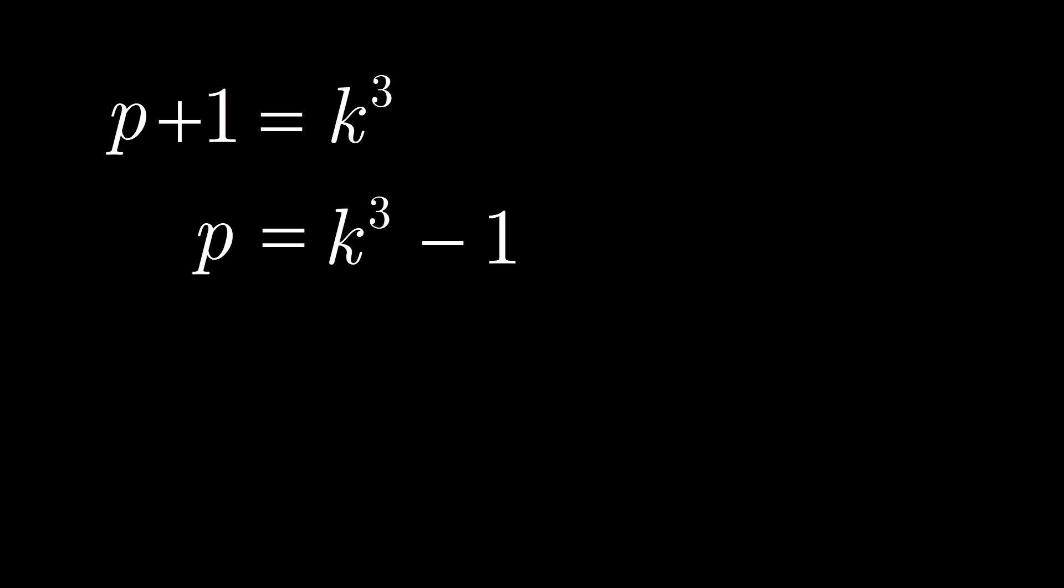Notice that we have a difference of cubes on the right side of this equation, which means it can be factored. Specifically, we can rewrite k cubed minus 1 as k minus 1 times k squared plus k plus 1.